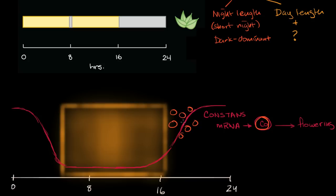And the answer is, is when this constans protein gets higher and higher, but there isn't light, it just naturally gets degraded. It just naturally gets degraded. So in the situation that I'm drawing right over here, if this is a shorter day, well, this plant won't flower. But if we have a longer day,